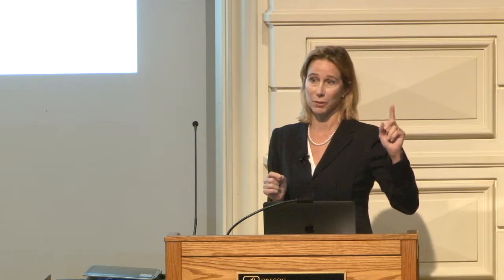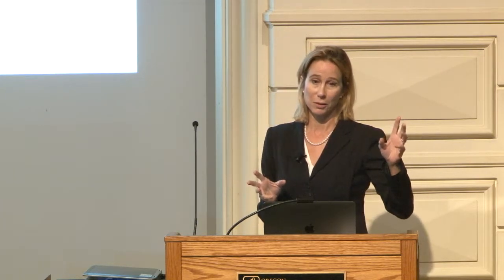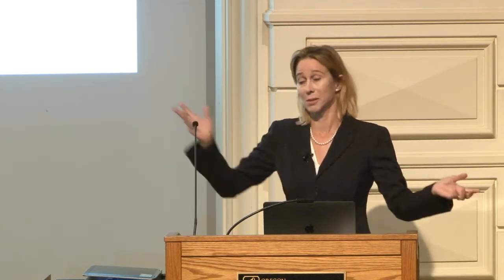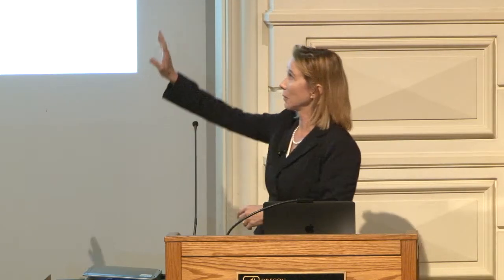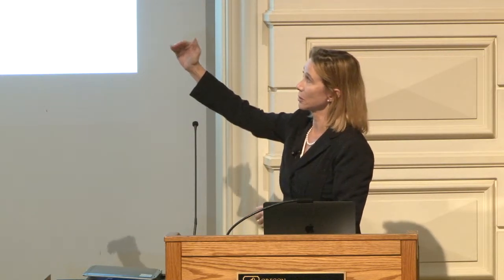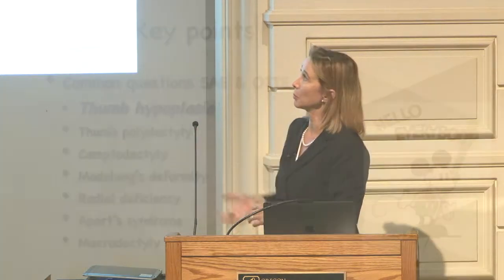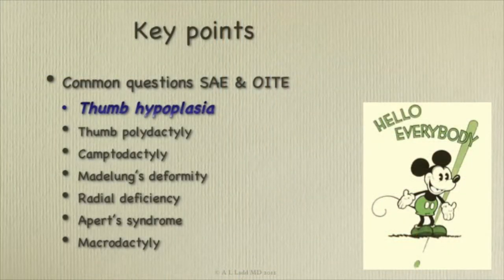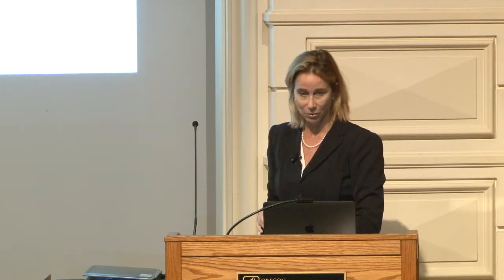Thumb hypoplasia is the number one question they ask in various forms, which is convenient because it revolves around the CMC joint. These are in order of frequency: thumb hypoplasia, thumb polydactyly, camptodactyly, matalungs, radial deficiency, APRTs, and macrodactyly. I'm happy to send a PDF for all of you for OIT, especially so you can cram it in a couple of weeks.